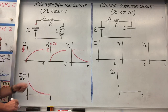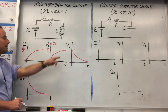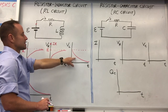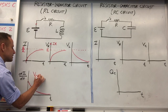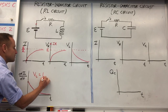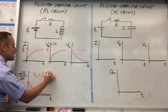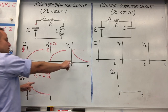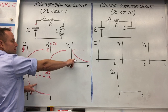The rate of change of current tapers down much like the inductor voltage does. That's because the voltage drop across an inductor is L times dI/dt. So that's why these two graphs look similar.